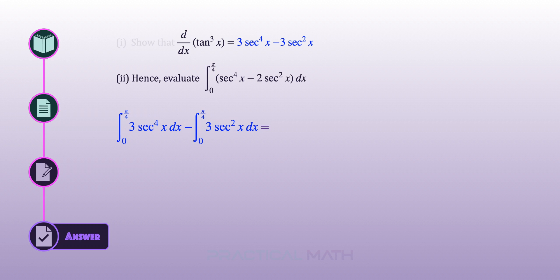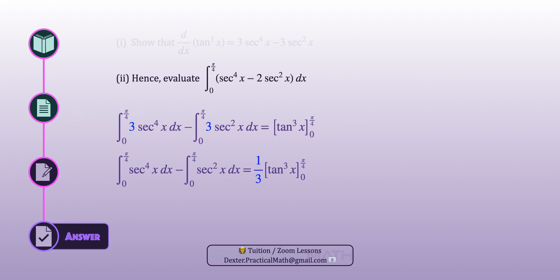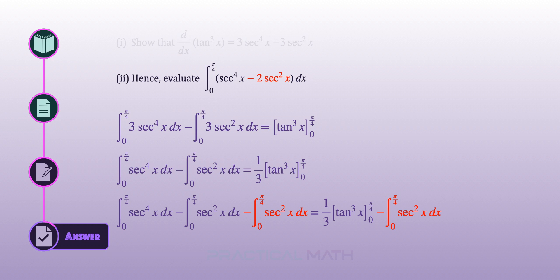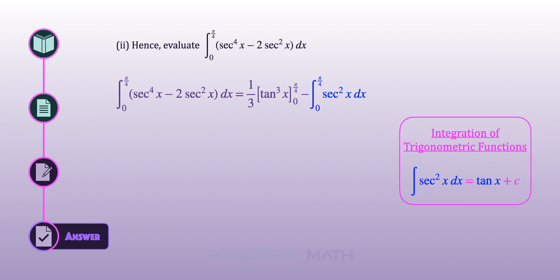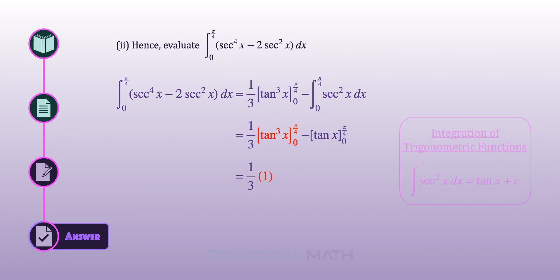Just like the earlier example, using integration as the reverse of differentiation, we integrate the result in part 1, giving on the left-hand side tangent cubed of x. Using the scalar multiple rule, we divide the entire equation by 3. The integral in the question involves negative 2 times secant squared of x, so we subtract an additional integral of secant squared of x from both sides. Integrating secant squared of x gives tangent of x from 0 to pi over 4. Evaluating tangent cubed of x from 0 to pi over 4 gives 1, and evaluating tangent x from 0 to pi over 4 also gives 1. The final answer is negative two thirds.